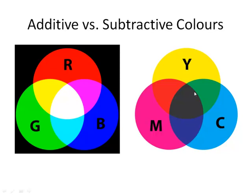When working with subtractive colours — as with paints or dye — if we add yellow, magenta, and cyan, we get a darker and darker shade until we get something near black. So the more colours we mix with subtractive colouring, the darker the result. But with light, as we add different colours together, we get a whiter or lighter result.